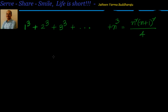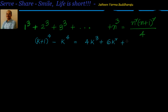We are going to leverage an algebraic identity. The identity we will use is: for a constant k, k plus 1 whole to the power of 4 minus k to the power of 4 is equal to 4k cube plus 6k square plus 4k plus 1. If you are not comfortable with that, we can cross-check it — we know from binomial expansion to the power of 4, the Pascal coefficients are 1, 4, 6, 4 and 1.